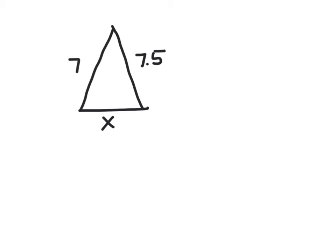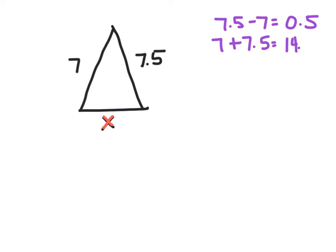Now let's look at another one. We want to know what X could be to make this a triangle. To find the smallest it can be, subtract: 7.5 minus 7 equals 0.5. So that is the smallest it can be — it can't be exactly 0.5, it just has to be a little bit bigger than that. To find the biggest, add: 7 plus 7.5 is 14.5.